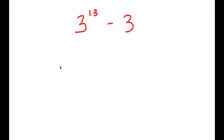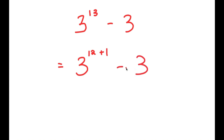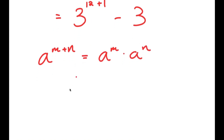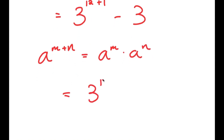So to solve this, I'm going to first start by rewriting this as 3 to the power of 12 plus 1 minus 3. Now if I have something in the form a to the power of m plus n, this is equal to a to the power of m times a to the power of n. So I get 3 to the power of 12 times 3 to the power of 1 minus 3.